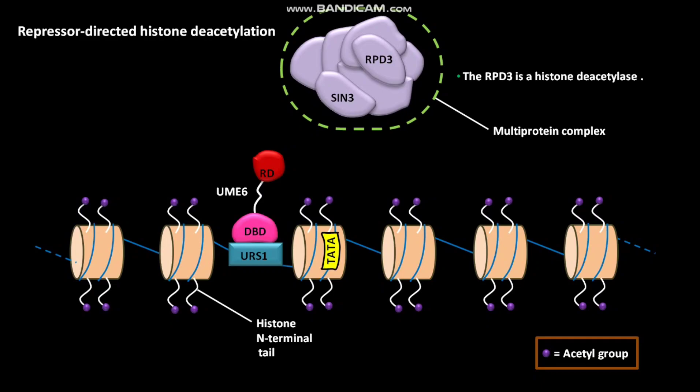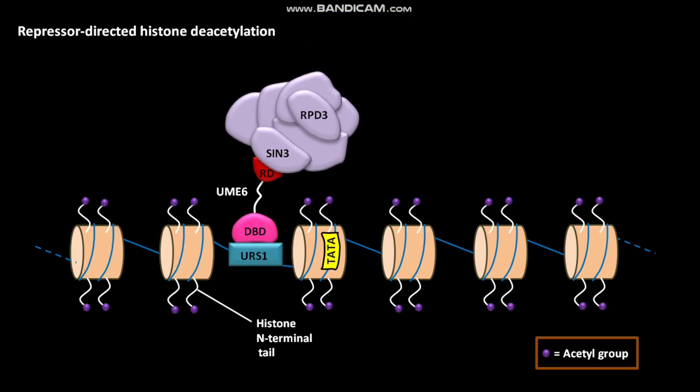The RD of UME6 then binds to the SIN3 protein of the multiprotein complex. The RPD3 in the multiprotein complex then causes deacetylation of histone N-terminal tails on the nucleosome.